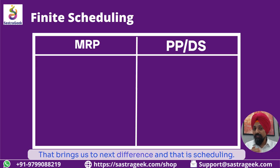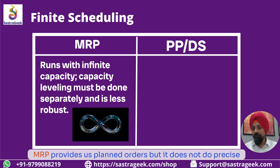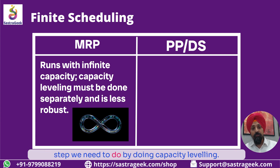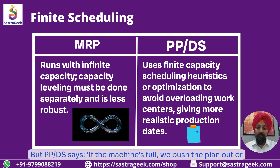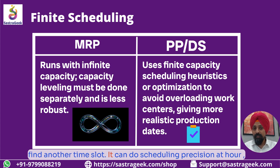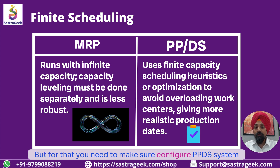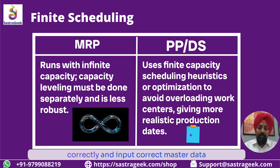That brings us to the next difference: scheduling. MRP provides planned orders, but it does not do precise scheduling to level the capacity — that is a separate manual step we need to do by performing capacity leveling. PPDS, however, says if the machine's full, it pushes the plan out or finds another time slot. It can do scheduling with precision at the hour, minute, or even seconds level. For that, you need to configure the PPDS system correctly and input correct master data.